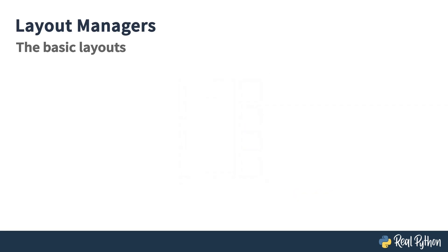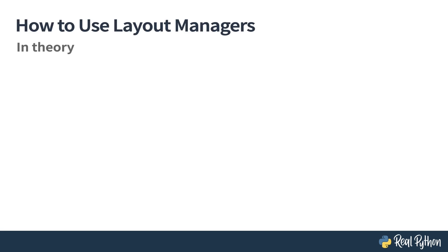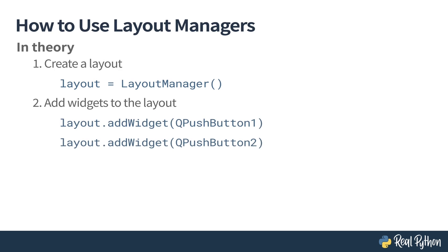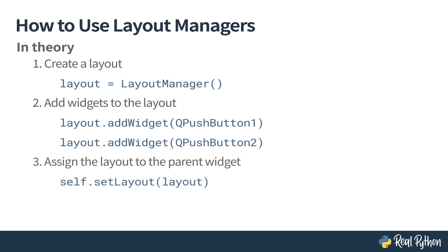Before we get into our first example, let's talk about how to use layout managers in theory. There are three steps you have to follow. Number one: create the layout itself, which has to be stored in a variable. The next step: add widgets to the layout — for example, if you have two buttons, you add those to the layout with add widget, passing the widget as the argument. And for the final step: assign the layout to the parent widget, which happens with set layout. So effectively, we take our main window, create a layout inside it, add widgets to that layout, and then the layout determines how the widgets are going to be laid out. With that covered, let's create our first example: a horizontally scaling GUI.